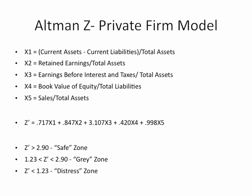The first ratio, X1, is simply net working capital — current assets minus current liabilities — divided by total assets. The second, X2, is retained earnings divided by total assets, in other words a bigger, more long-term financing structure type ratio. Three is EBIT, earnings before interest and taxes, divided by total assets.